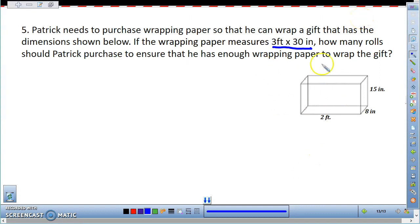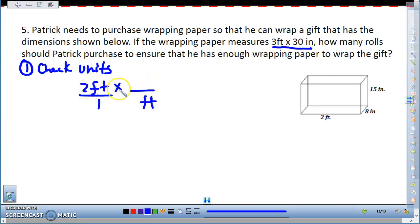So the first thing that you should notice here, and that you should check always, is check units. Now if you notice here we don't have all the same units - I have inches, inches, and feet. So I'd like to convert feet to inches. So I'm going to take 2 feet and multiply by our conversion, 12 inches per 1 foot. So this gives us 24 inches.